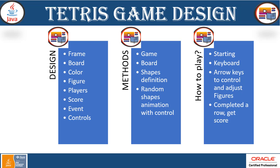Regarding players, we need to mention player information, including score — adding the score, getting it, displaying it, and showing who is winning. For events, we have to have an event with respect to their controls and some action listener implementation. This is all about the design.